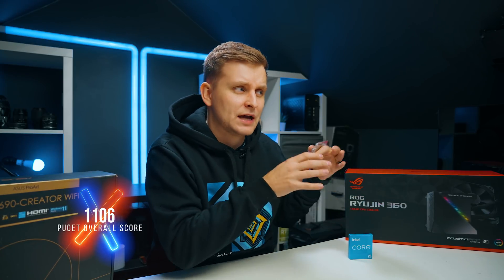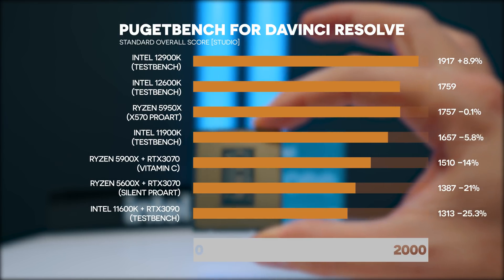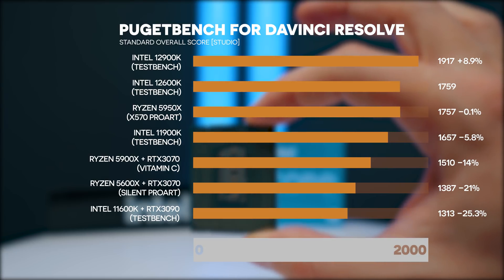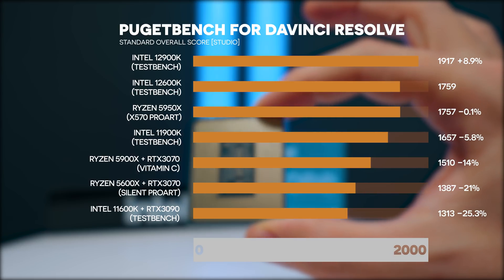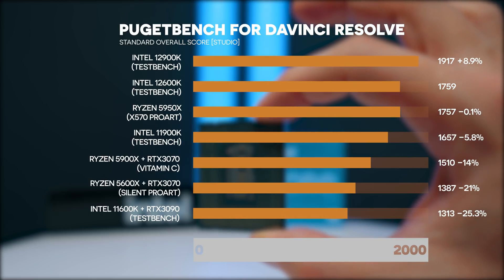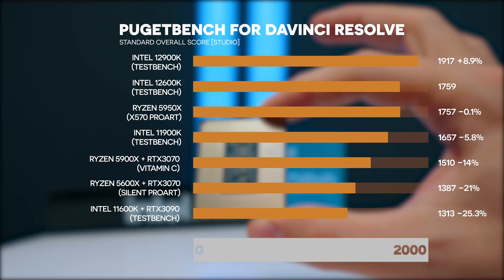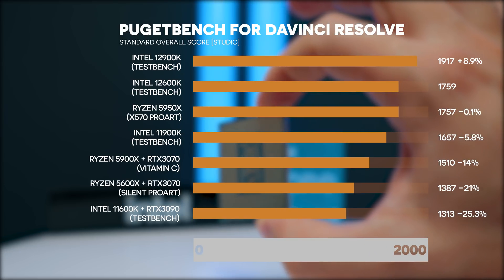With H.265 10-bit 4:2:2 4K 60fps from the Canon R5, this chip breezes through on the timeline — better than any Nvidia encoder or decoder, and even better than Threadripper processors. Unfortunately I can't compare After Effects results because Puget Bench changed their benchmarking baseline, making old results incomparable. On DaVinci Resolve we see a similar situation to Premiere Pro: the 12900K is 8.9% faster, the 5950X is only 0.1% slower, the 11900K is 5.8% slower, and the 5900X is 14% slower. The 5600X is 21% slower, and the Intel 11600K i5 from the previous generation is 25.3% slower.